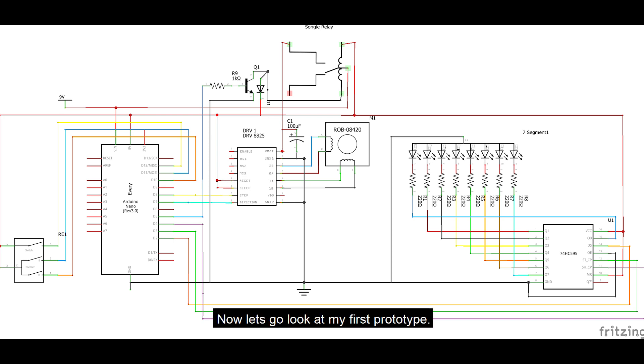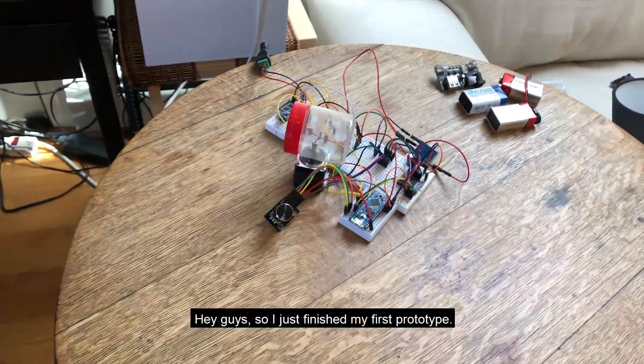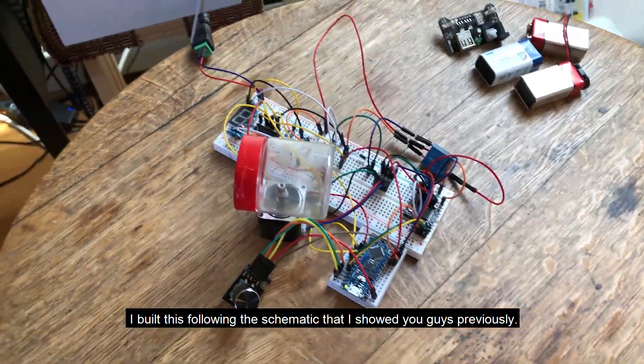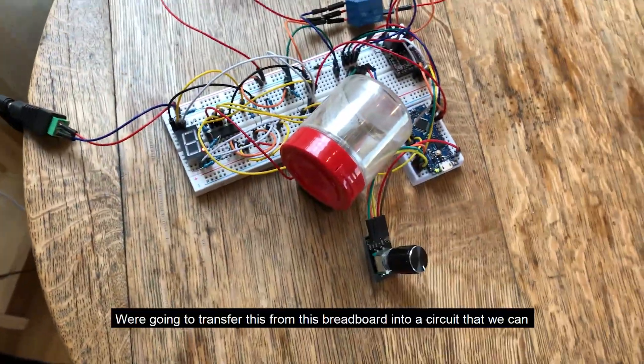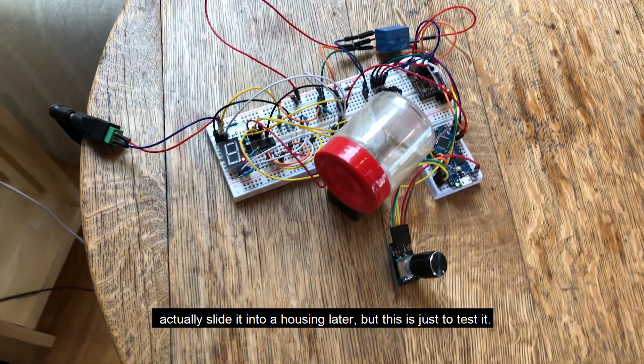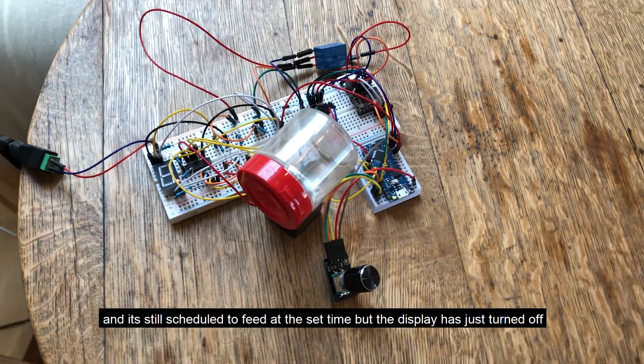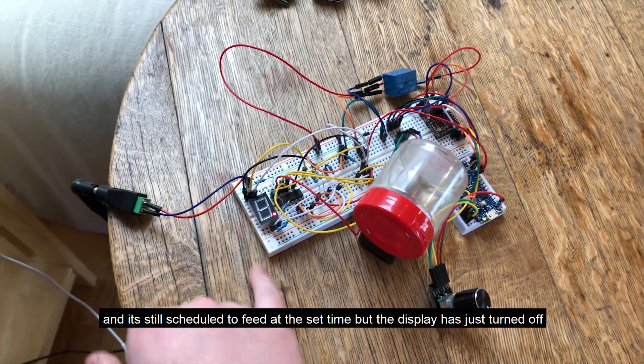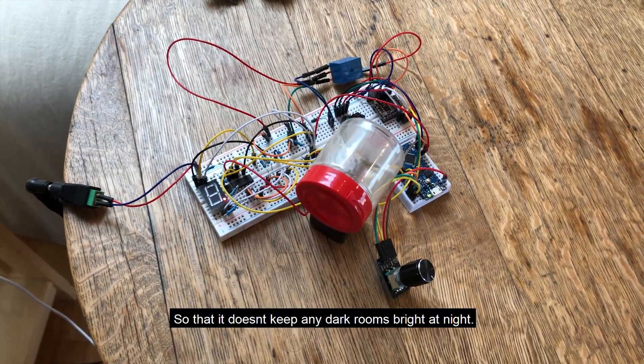Hey guys, so I just finished my first prototype. I built this following the schematic that I showed you guys previously. Hopefully yours looks neater than mine. We're going to transfer this from the breadboard into a circuit that we can actually slide into a housing later, but this is just to test it. Currently the device is in sleep mode, so it is still counting and it is still scheduled to feed at the set time, but the display has just turned off. It turns off after 15 seconds of inactivity so that it doesn't keep any dark rooms bright at night.